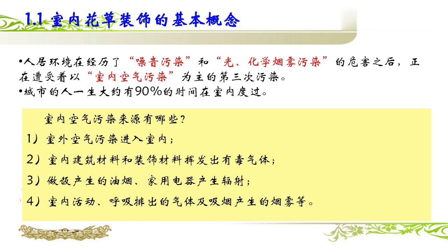那么困扰我们的室内空气污染来源是从哪里来的呢？第一，室外空气污染进入室内，外面的雾霾、沙尘进来了。第二，室内的建筑材料和装饰材料挥发出的有机气体，办公室、家里的门窗、新装修的油漆等材料都会挥发出大量的有机气体。还有家庭做饭产生的油烟，以及家用电器产生的辐射，还有室内呼吸排出的气体、卫生间和厨房排出的气体，这些都是污染源。